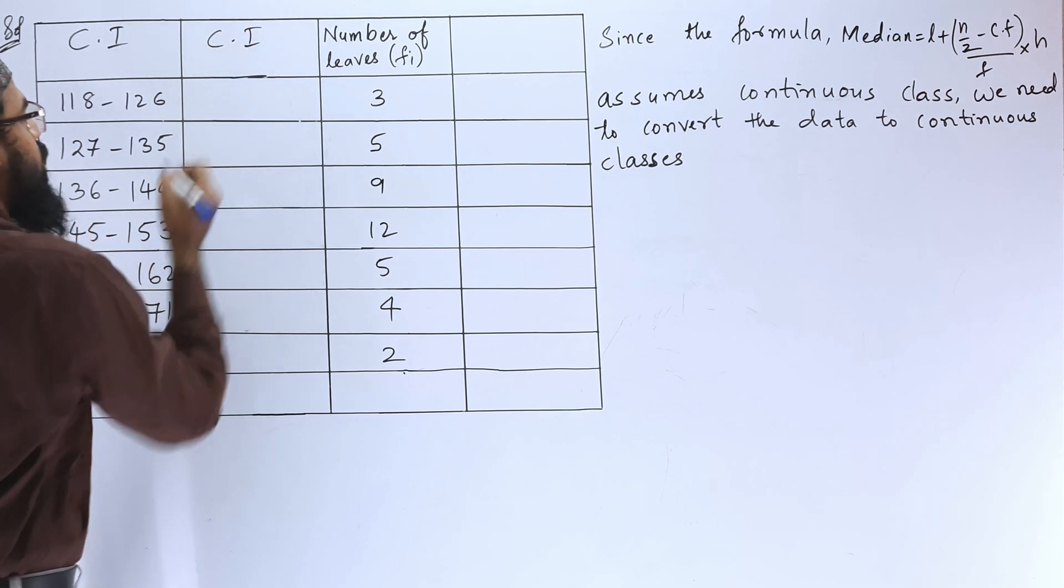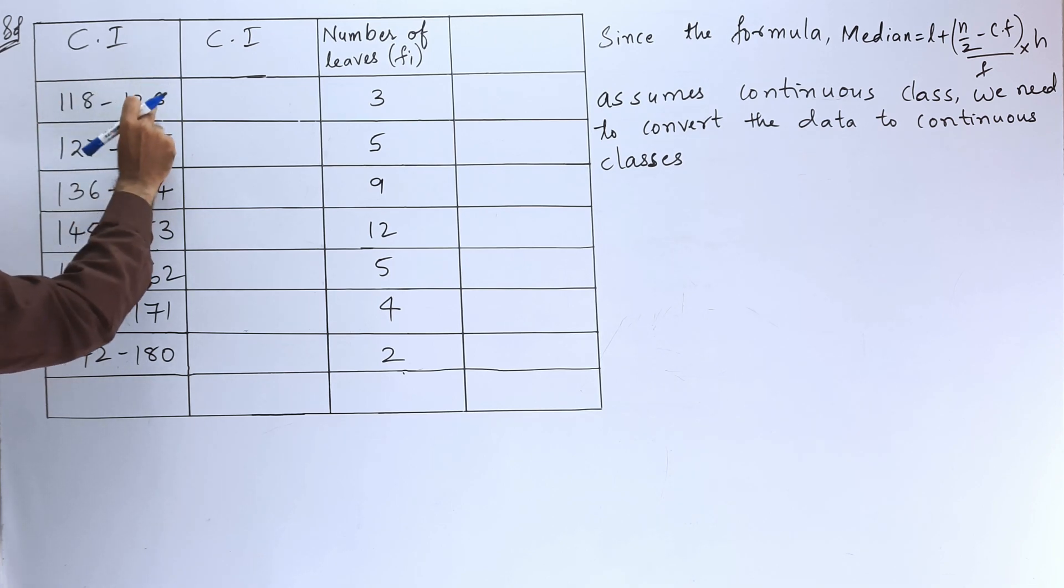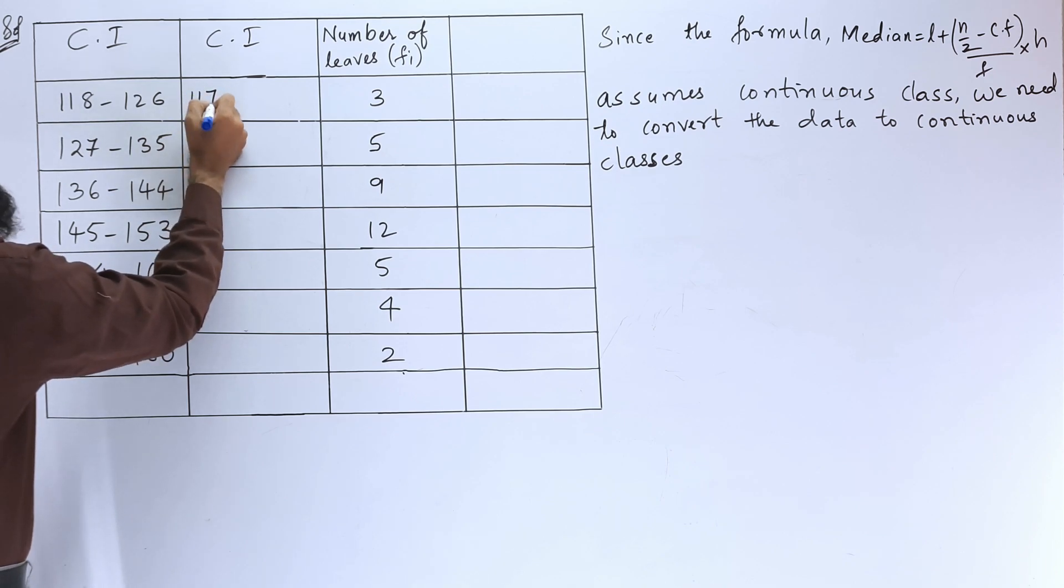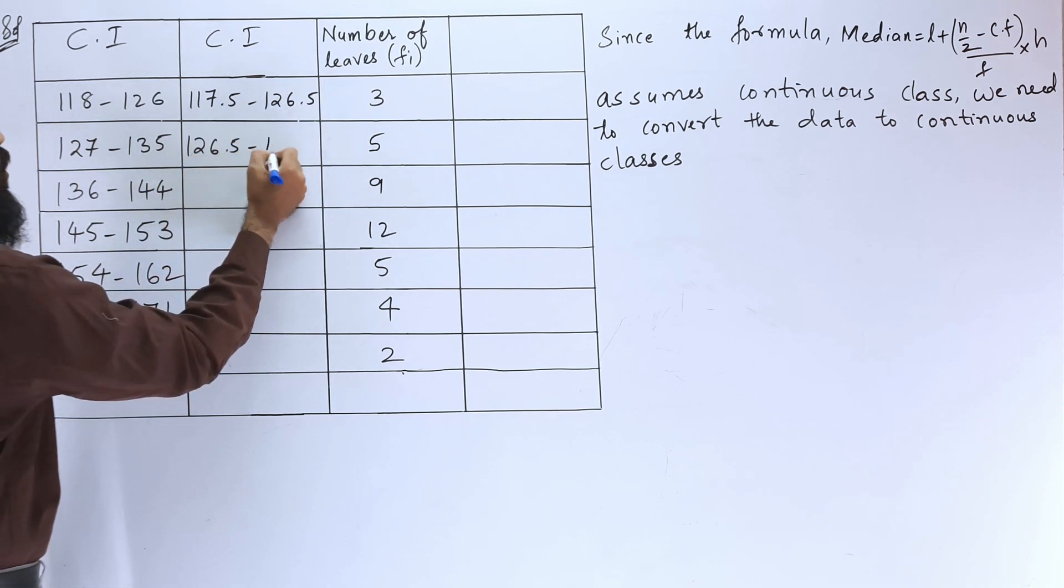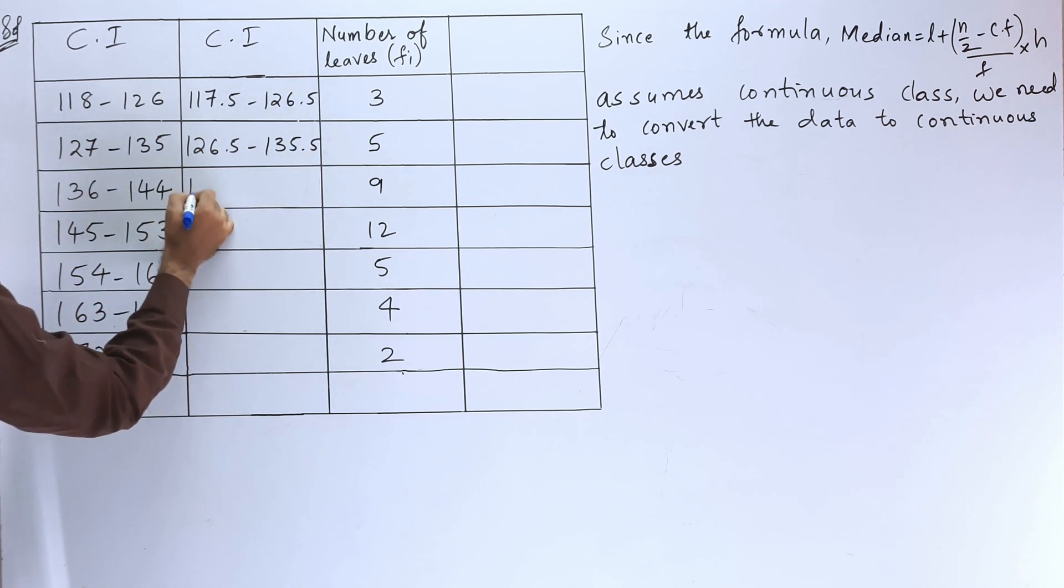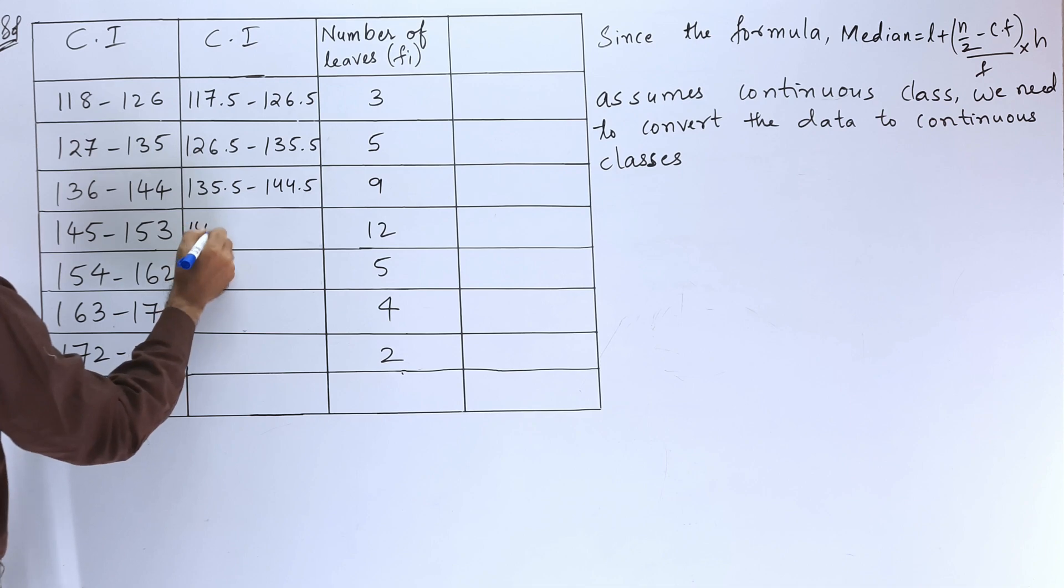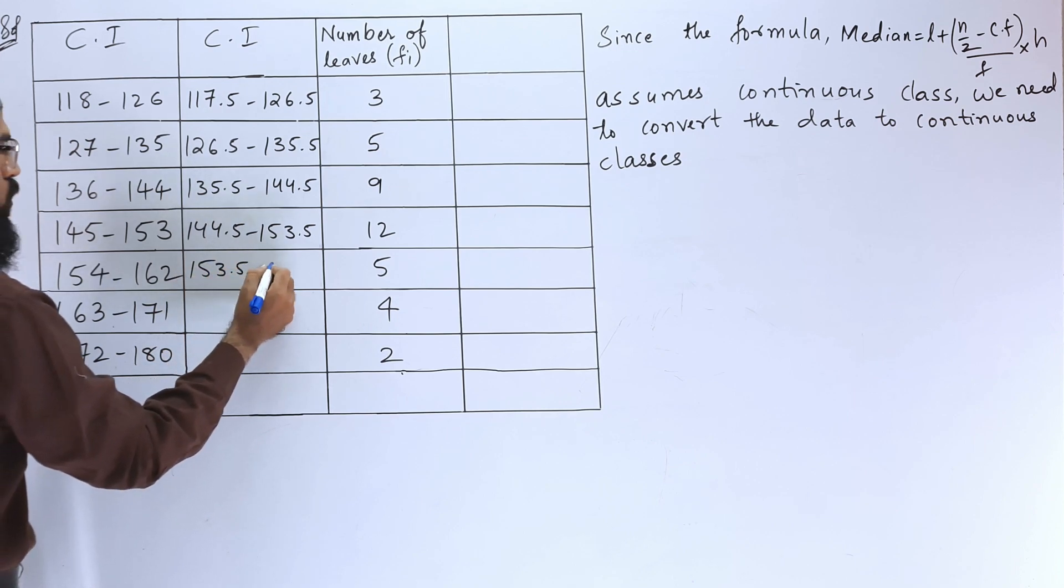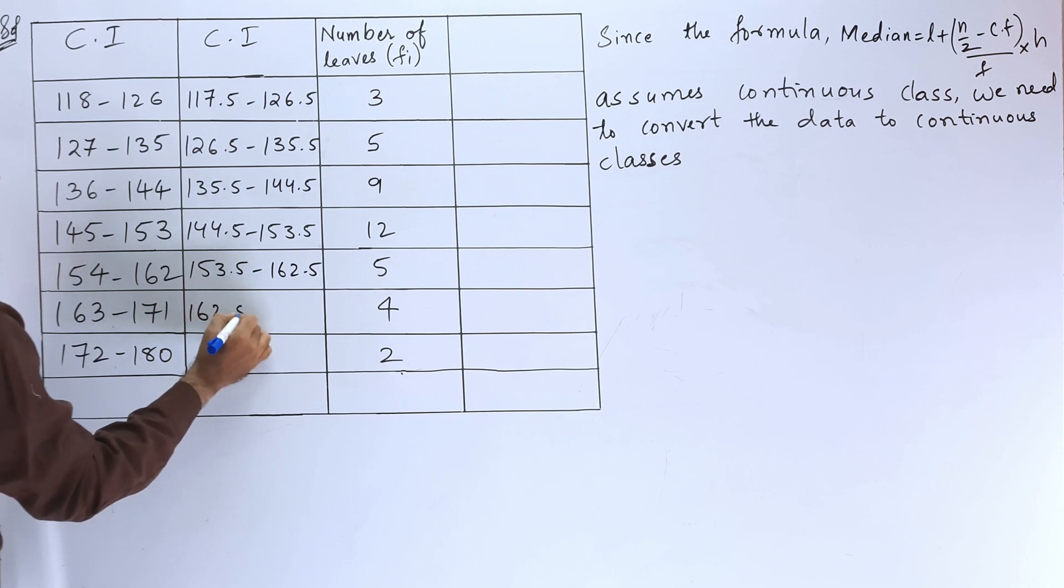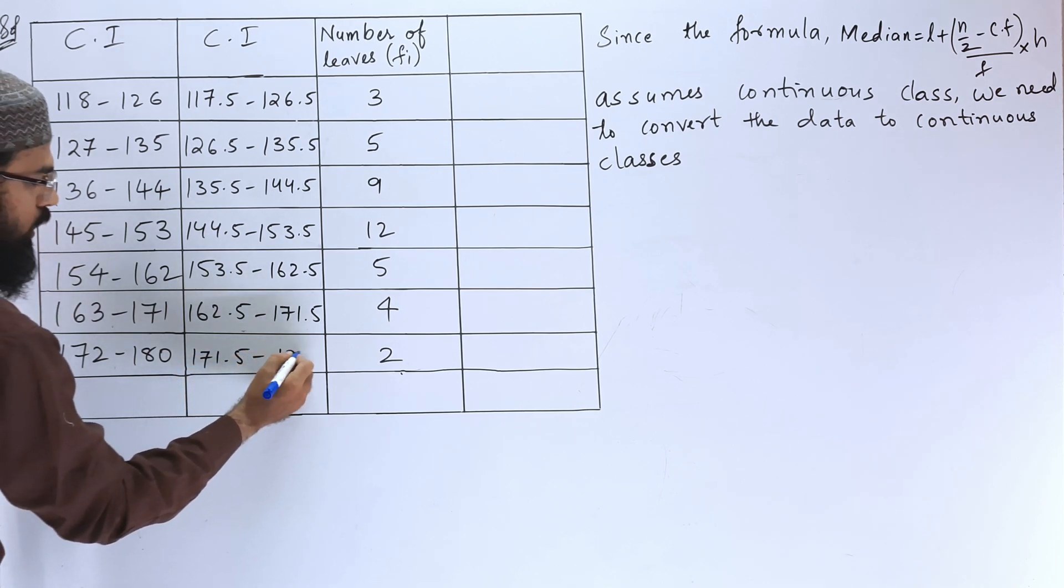We are going to write the class interval in continuous. For making a continuous class, we have to subtract 0.5 from the lower limit and add that 0.5 to the upper limit. So 117.5 to 126.5, 126.5 to 135.5, 135.5 to 144.5, 144.5 to 153.5, 153.5 to 162.5, 162.5 to 171.5, 171.5 to 180.5.